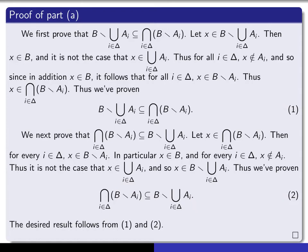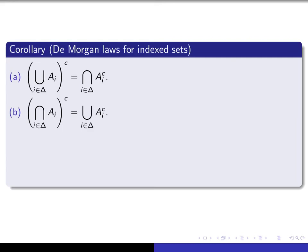Before going on, remember what we've just proven: B minus the union equals the intersection of all B minus a sub i. I claim that's a little bit more general than what I'll refer to as De Morgan's Law, which we look at on the next page. De Morgan's Laws state that if you take the union of an indexed family and then take the complement of the resulting union, that's the same as intersecting all of the complements. And if you take the intersection of the entire family and then take the complement, that's the same as taking the union of all of the complements. This is a corollary — something that follows fairly easily from the theorem we've just proved.